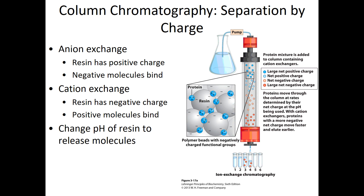To elute or remove those negatively charged proteins, we lower the pH. With the cation exchanger, it's the exact opposite — the resin inside the column is negatively charged. Positively charged amino acids stick to that negatively charged resin, so we end up with a group of positively charged proteins stuck on the resin. To release them, we need to make the protein no longer positively charged.